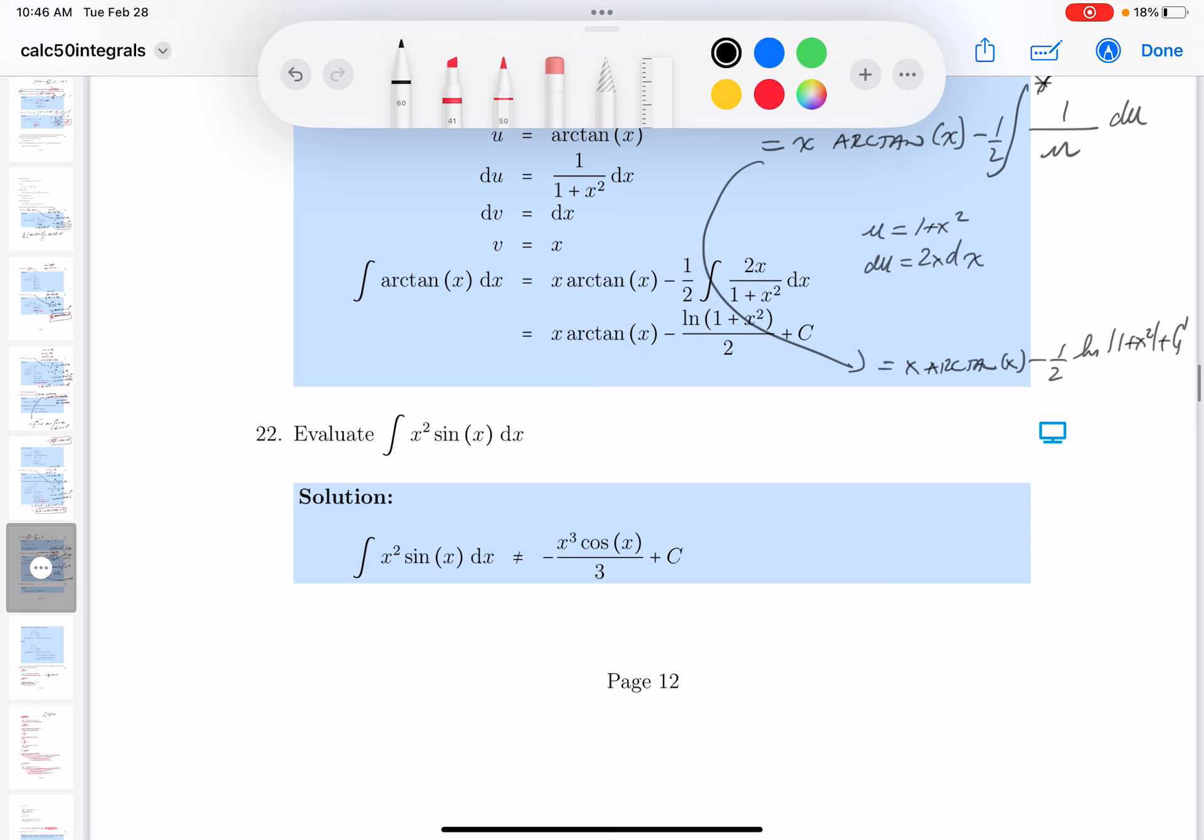All right, I'm going to simplify a little tiny bit and we'll look at the key. It's going to be x arc tangent of x minus one half the natural log. I can remove the absolute value symbol, 1 plus x squared plus c.